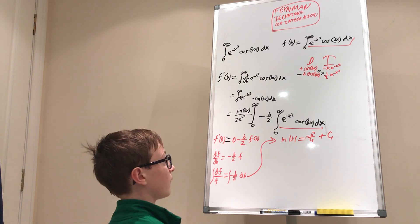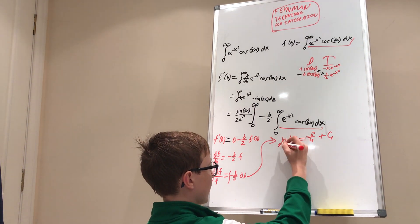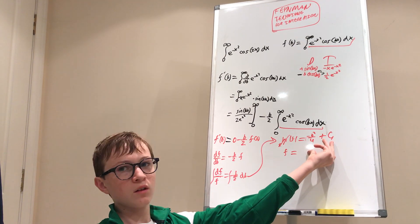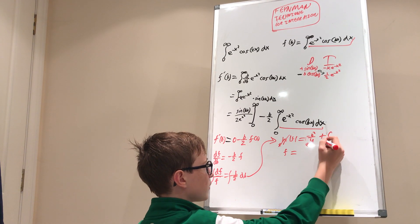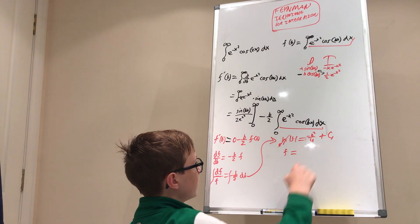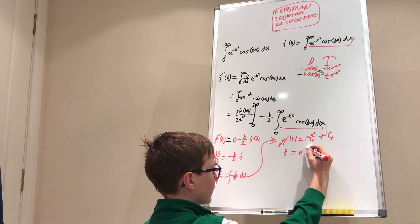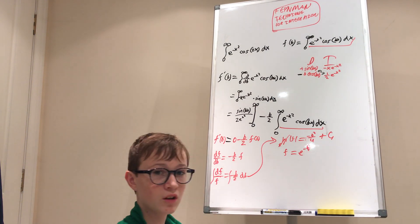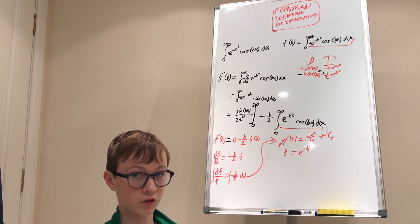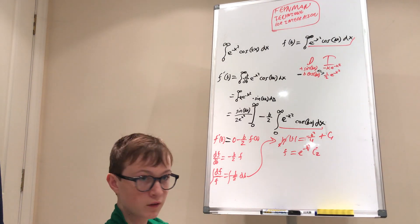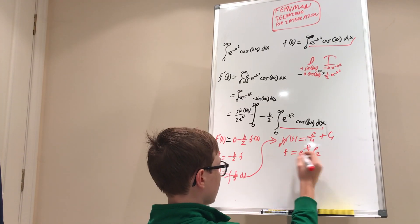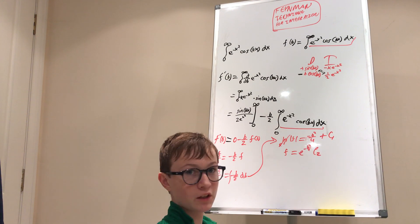To get f on its own, we exponentiate both sides. The natural log and e cancel, so f equals e to the power of negative b squared over four, times e to the power of C₁. Since e to the C₁ is just a constant, we write f(b) equals C₂ times e to the negative b squared over four. If we can solve for C₂, we just plug in b=2 and that's our answer.